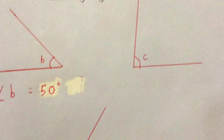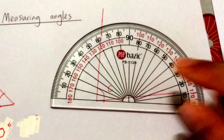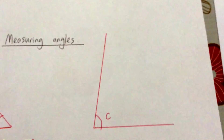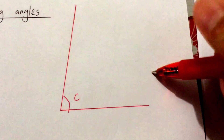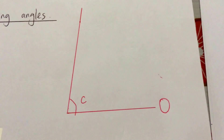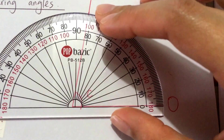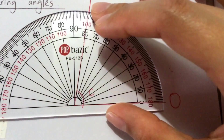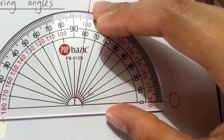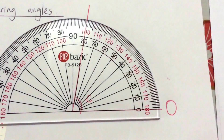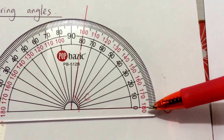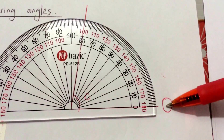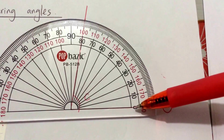Now, what happens if I want to use the angle on the inner scale? I'm going to show you now. Here, I have angle C that I want to measure. Again, I put 0 here. Place my protractor. Make sure my points are touching. Now, 0 is here, which means I do not use the outer scale because the outer scale reads 180 here — that's wrong. 0 is here, which means I use my inner scale.